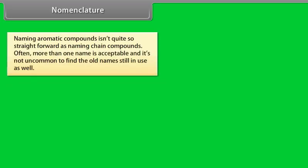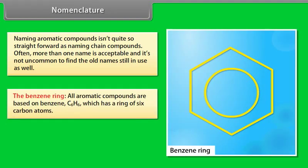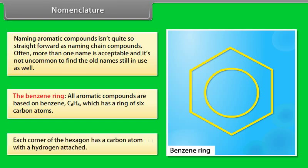Nomenclature. Naming aromatic compounds isn't quite so straightforward as naming chain compounds. Often, more than one name is acceptable, and it's not uncommon to find the old names still in use. All aromatic compounds are based on benzene, C6H6, which has a ring of six carbon atoms and has a hexagonal symbol. Each corner of the hexagon has a carbon atom with a hydrogen atom attached.